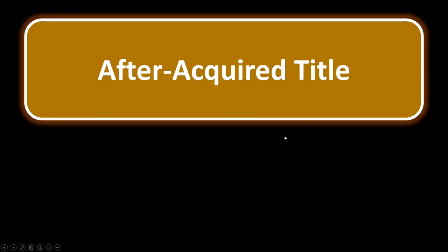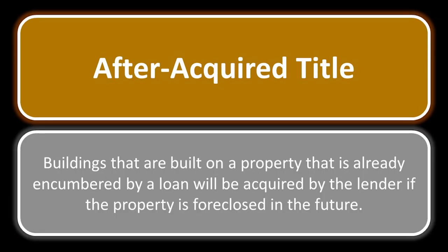After-acquired title. This deals with situations where the trustee has to foreclose on a property. If a barn, garage, or other structure was built on the property after the loan was made, the trustee is also able to foreclose on that addition. Buildings built on a property already encumbered by a loan will be acquired by the lender if the property is foreclosed in the future — that's after-acquired title.